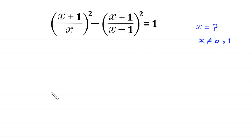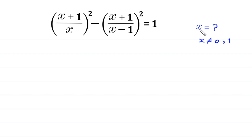Hello, welcome to how to solve this very nice algebra equation: (x + 1/x)² − (x + 1/(x−1))² = 1. We need to find all possible values of x, where x is not equal to 0 or 1.